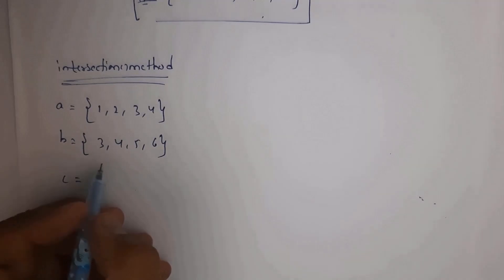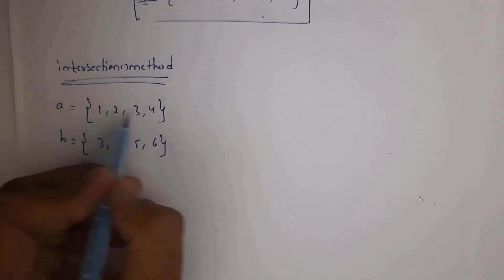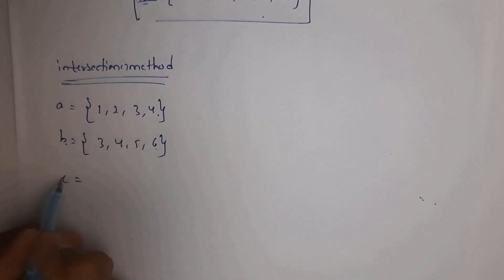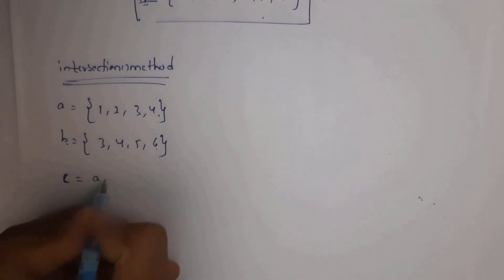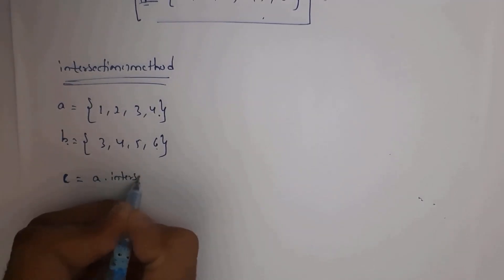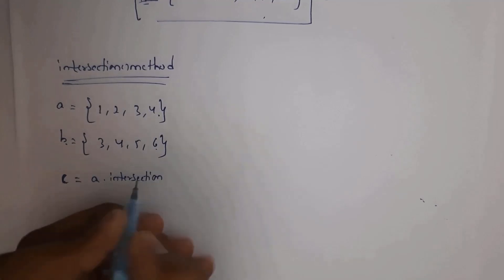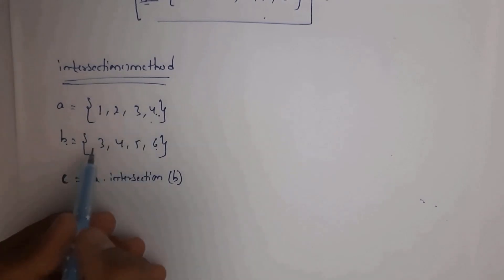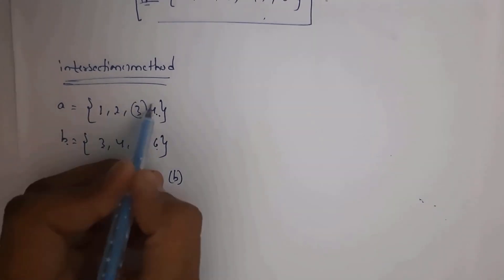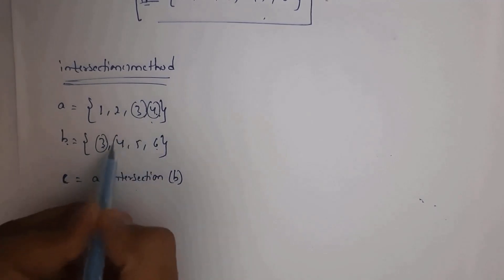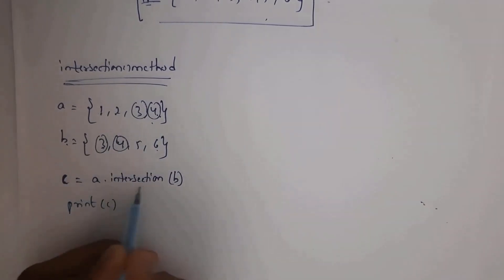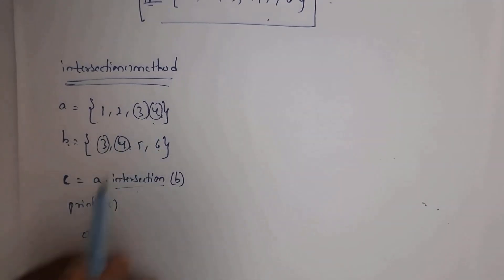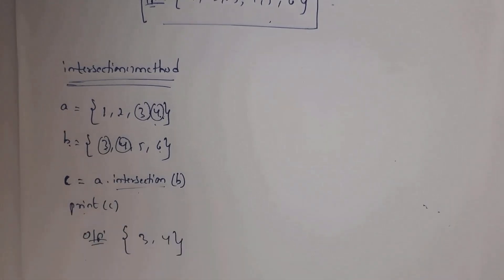Next I will explain the intersection method. Here a = {1, 2, 3, 4} and b = {3, 4, 5, 6}. I written c = a.intersection(b). The intersection method takes only the common items. In both sets, 3 and 4 are common. So whenever you write print(c), you will get output 3, 4. This is the use of intersection — it prints only similar items present in both sets.